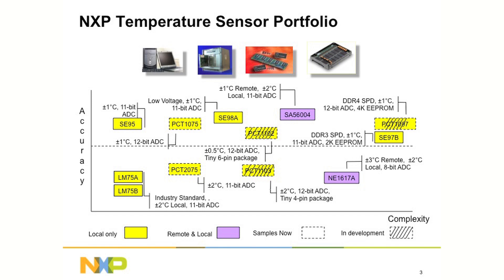NXP offers better specification devices compared to the industry standard LM75. While the standard device is specced at plus or minus 2 degrees C accuracy, the NXP device has a plus or minus 1 degree precision.